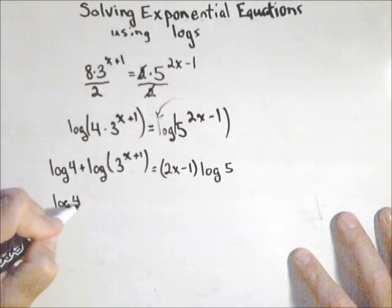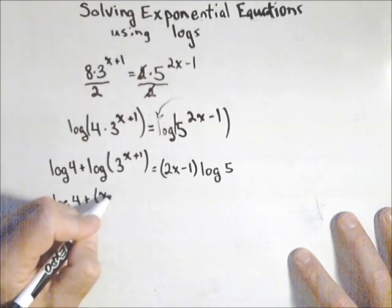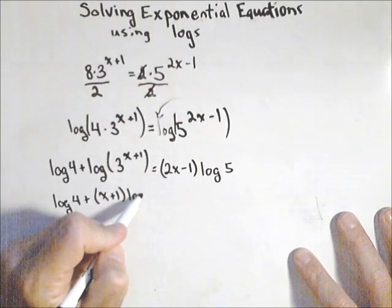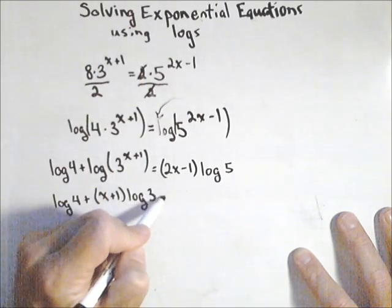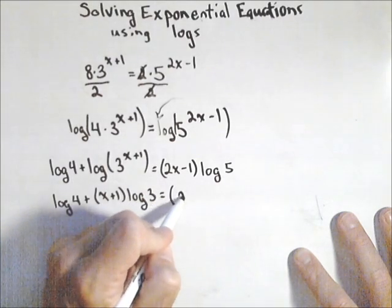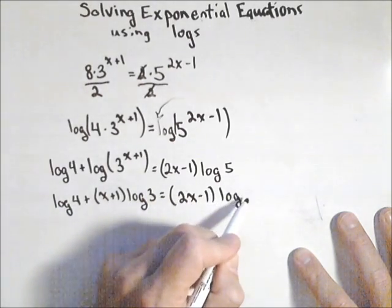So I have log of four, which is just a constant, plus x plus one. And notice I am putting the exponents in parentheses. That's going to be important because it's this whole quantity multiplied by log of three. And same thing over here, the whole quantity, two x minus one, being multiplied by log of five.